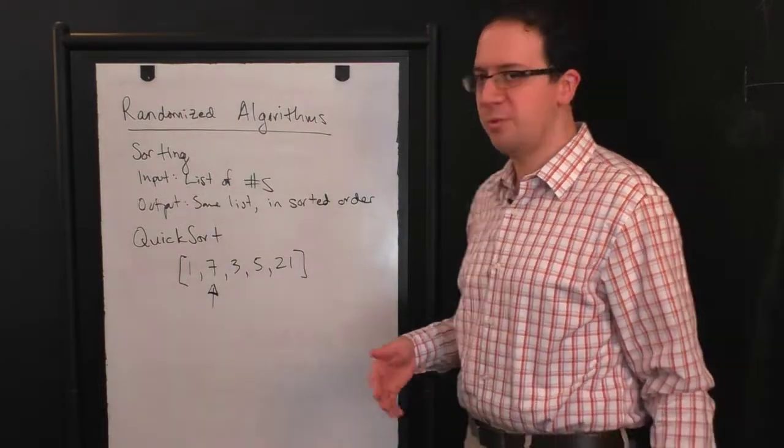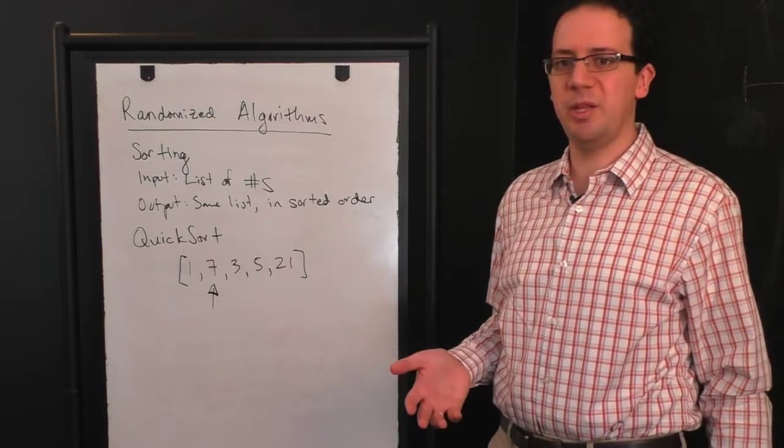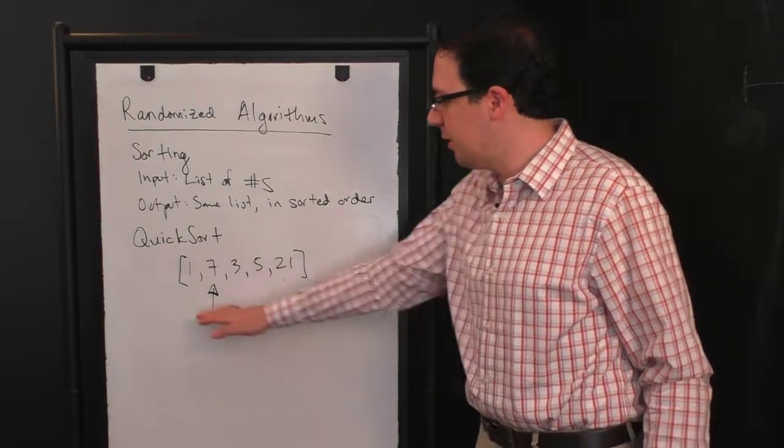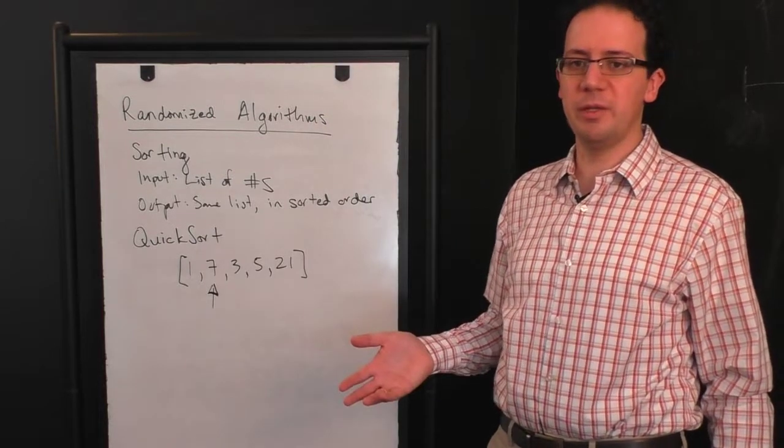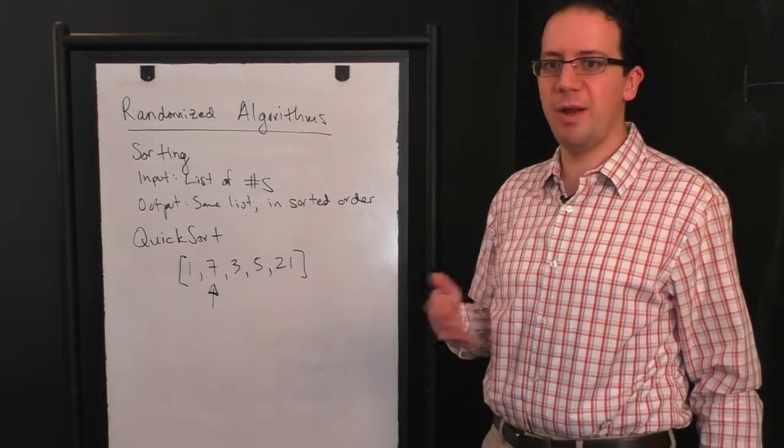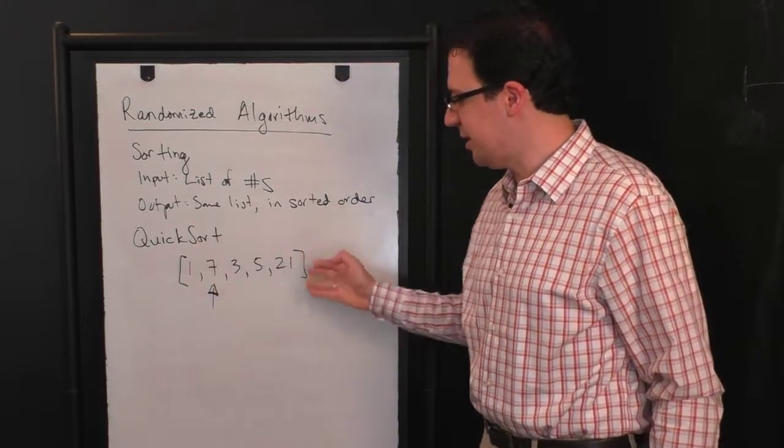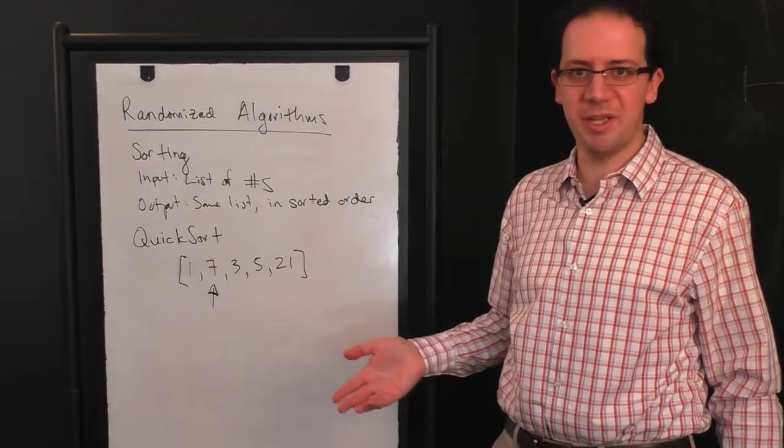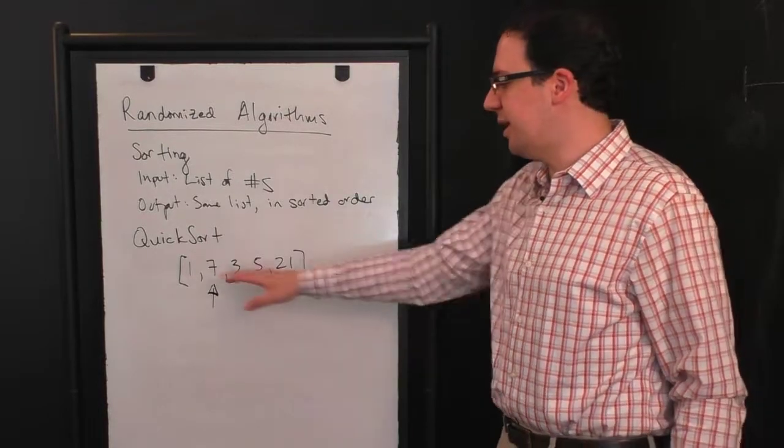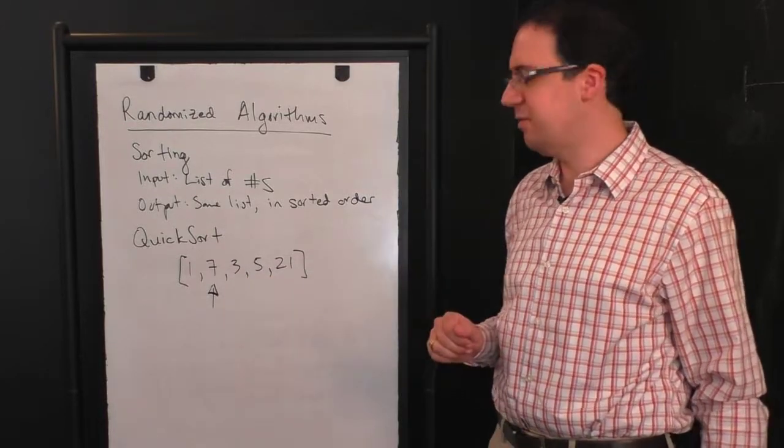what does randomly pick mean? Because we didn't say that the algorithm has the ability to randomly pick numbers. It has the ability to randomly flip coins. Well, this list has length six. So it flips three coins, which gives it three bits. So there are eight possibilities. And it assigns each of those possibilities, the first six possibilities to this. If it gets the last two possibilities, it flips again. So picking randomly from a list is something that a randomized algorithm can very easily do.